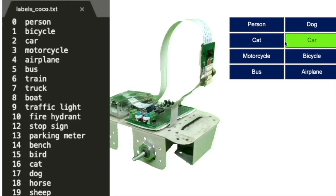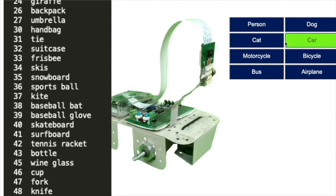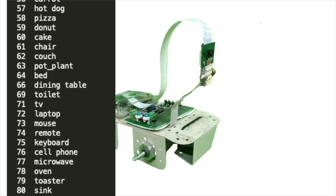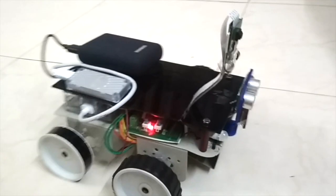The code can be easily modified to monitor any of the 90 objects available in the machine learning model and actuate robotic motion or sound alarm. Let's see a demo.